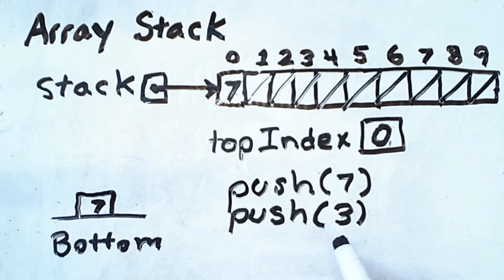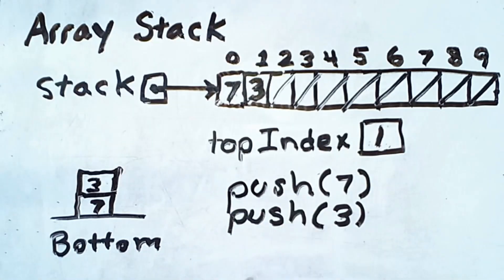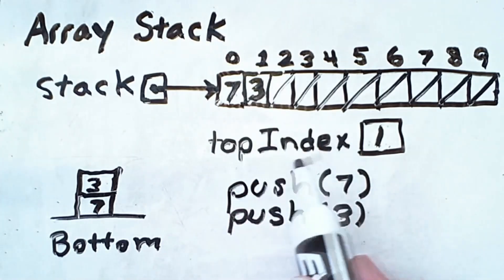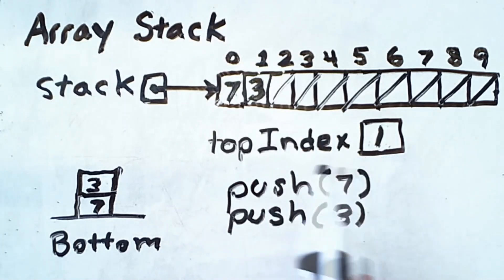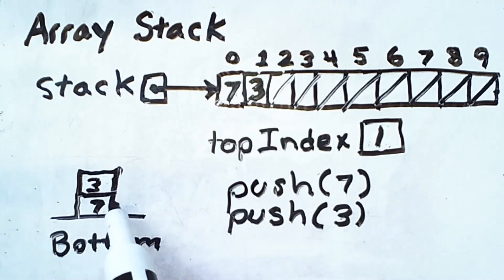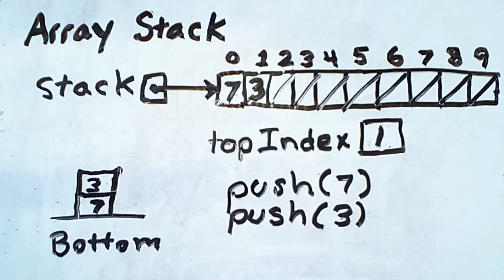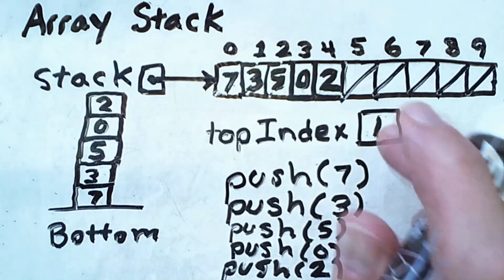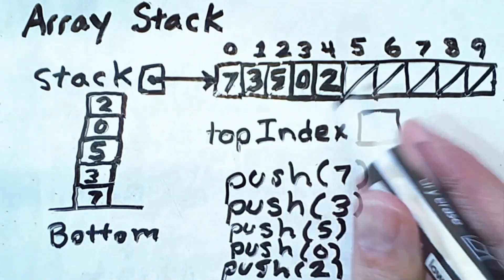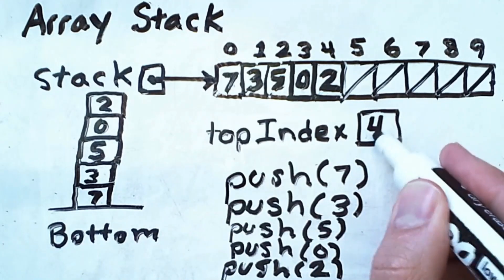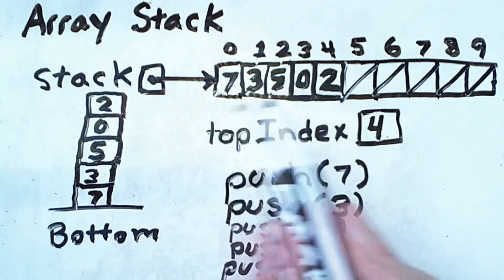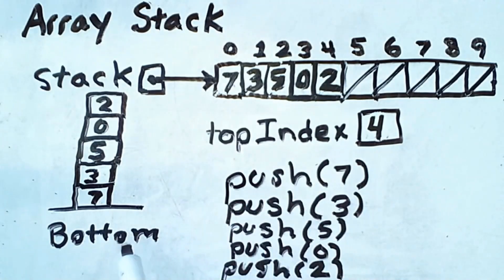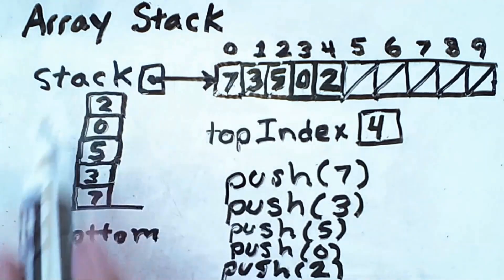If I push again, the newly pushed value of 3 occupies index 1 and is identified as the top index by this variable. We can see that the 3 is on top of the 7. After pushing several more values — 5, 0, and 2 — the top index becomes 4, and the underlying array and abstract stack representation look like this.